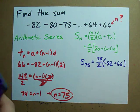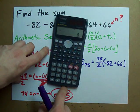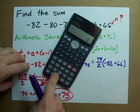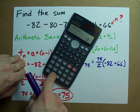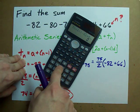I'm going to do this on my calculator, because I can't do that in my head. Let's make it so you can see what I'm typing. 75 divided by 2 times negative 82 plus 66.